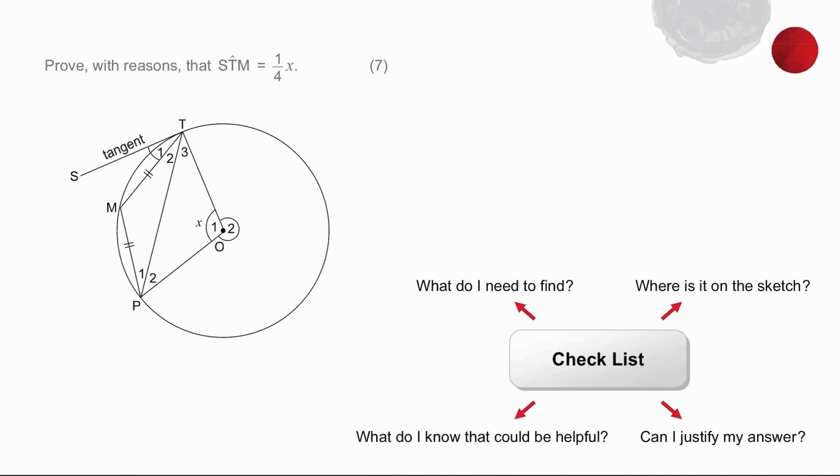So we've pretty much gone through our checklist. We have thought about what we need to find. We know where it is on the sketch. What do we know that could be helpful? We'll put that into practice as we try the actual question. And can I justify my answer? So the challenge now is what do we know that could be helpful? And can I justify my answer?